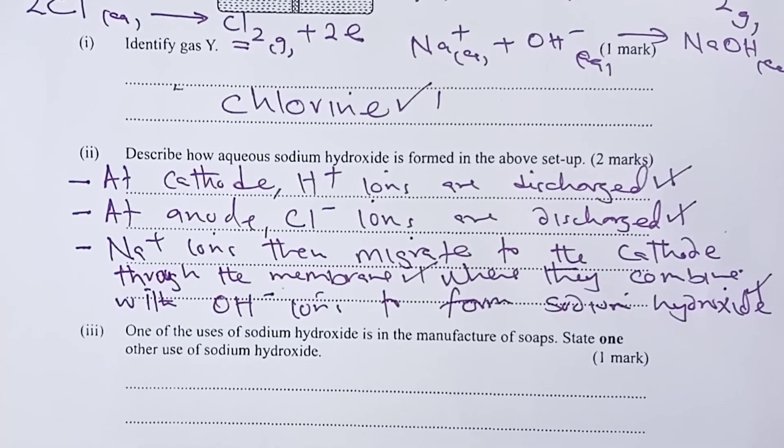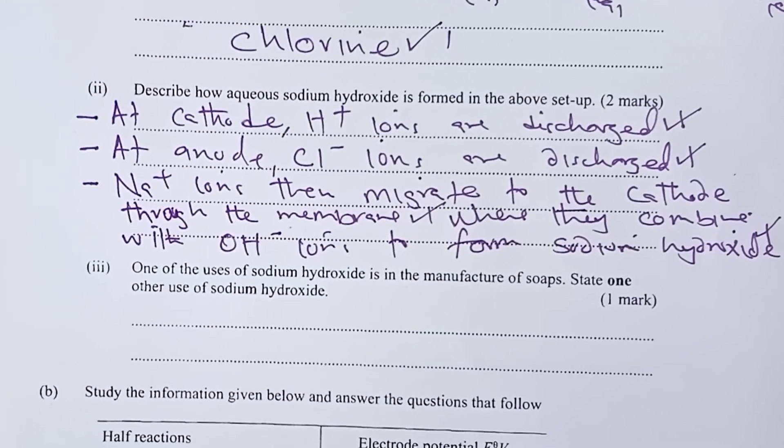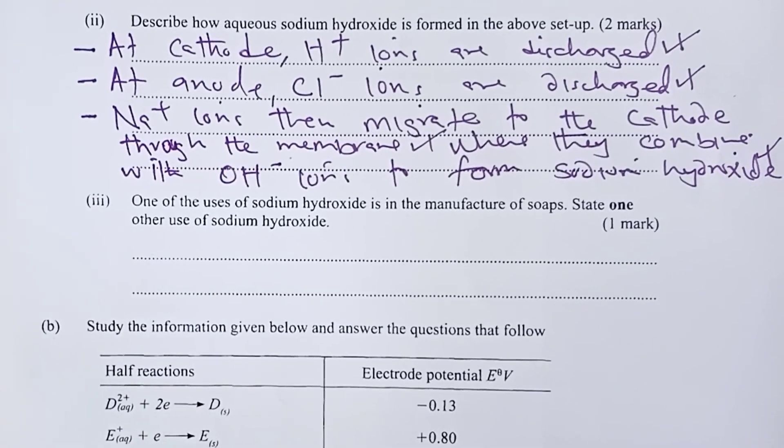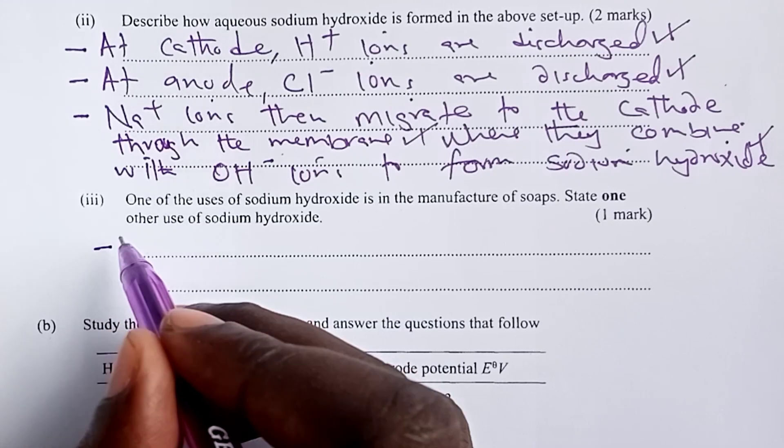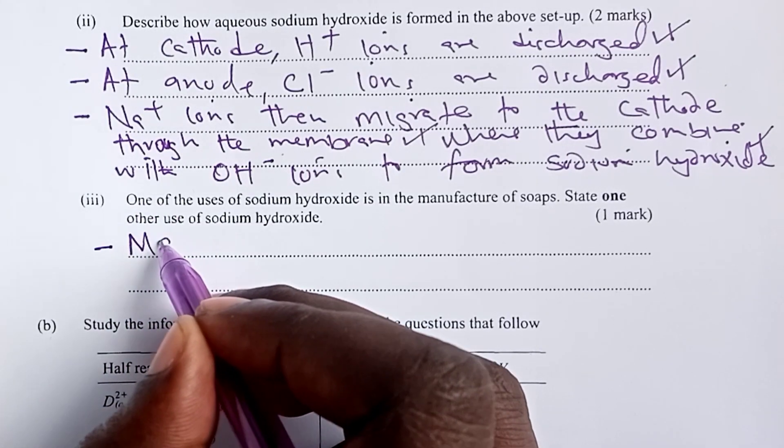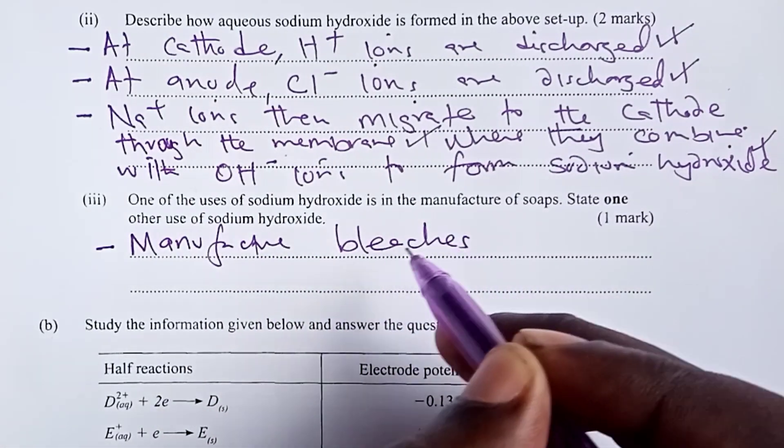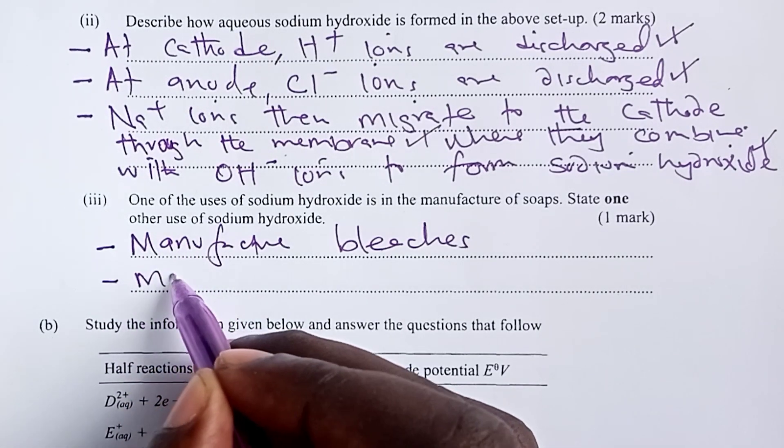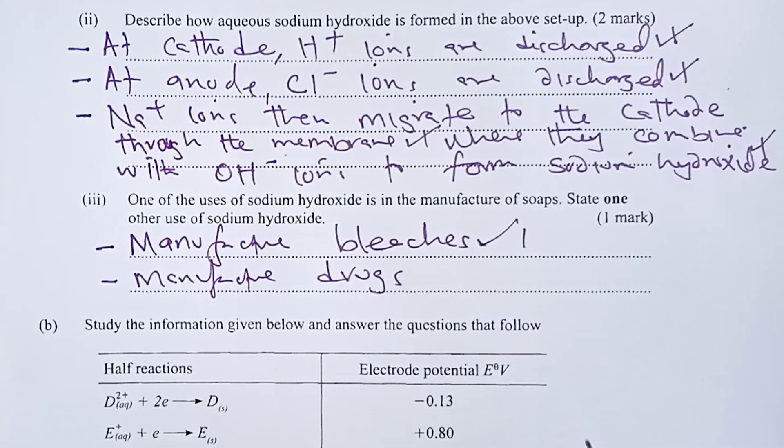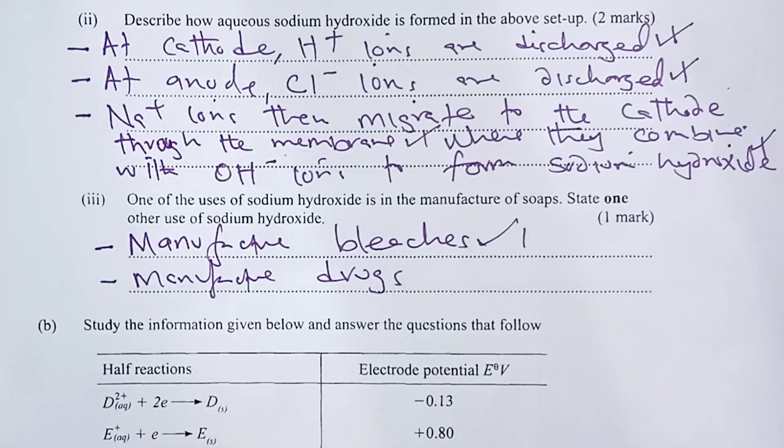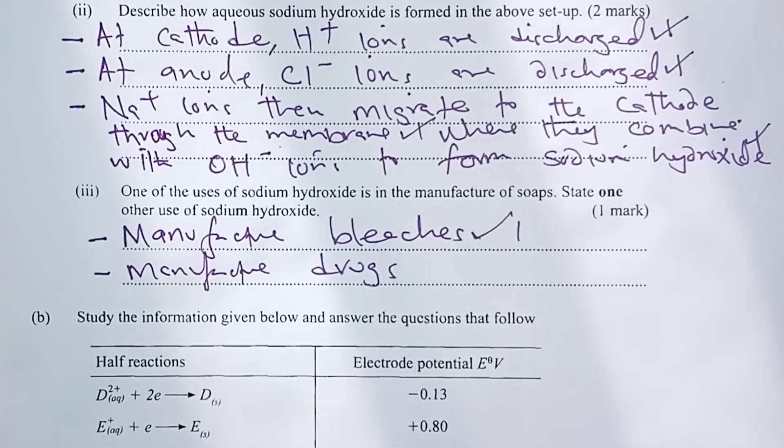Part 3. We are asked that one of the uses of sodium hydroxide is in the manufacture of soap. We were asked to state one other use of sodium hydroxide. So, sodium hydroxide can be used to manufacture bleaches. Sodium hydroxide can also be used to manufacture drugs. So, we were asked anyone, and therefore, any of those two would give the student the one mark for section 3.